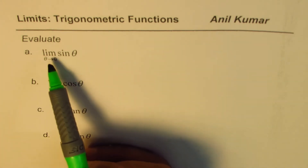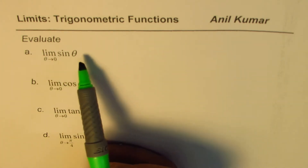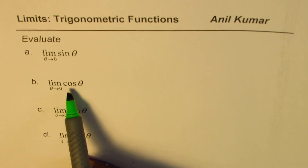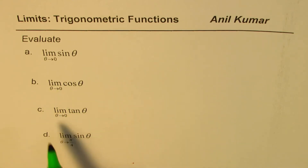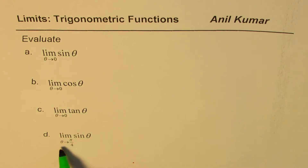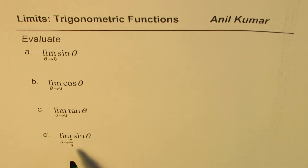We need to evaluate: the limit of sine θ as θ approaches 0, the limit of cosine θ as θ approaches 0, the limit of tan θ as θ approaches 0, and the limit of sine θ as θ approaches π/4. Remember, the argument θ should always be in radians when we are talking about limits of trigonometric functions.